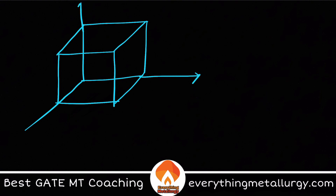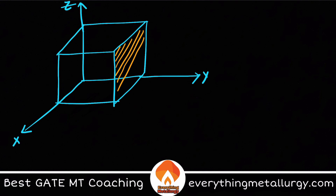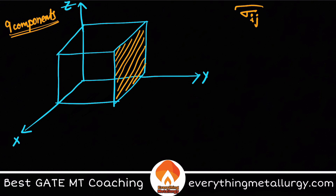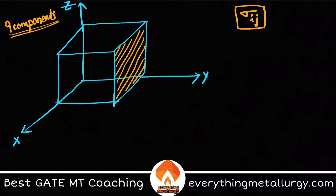Here is my cube with x, y, and z directions. One thing to remember is the plane of consideration. Let's say I am considering the plane 010. We are interested in studying the state of stresses acting on the body, and we should get nine components. Sigma i j represents a direction and the plane on which it is acting.